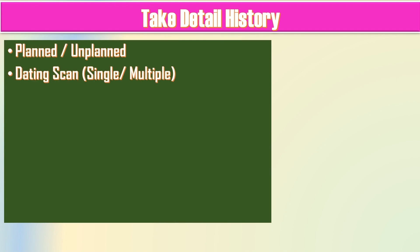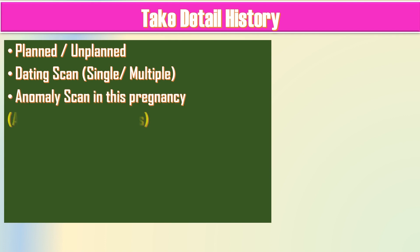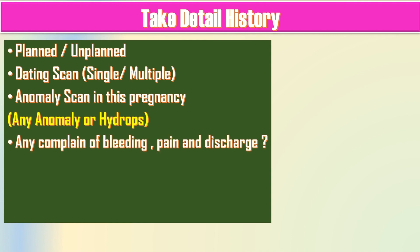Then take a detailed history: whether it was a planned or unplanned pregnancy, whether a dating scan was done, whether it was a singleton or multiple pregnancy, anomaly scan in this pregnancy, and any anomaly or hydrops shown on that anomaly scan. Ask about any complaint of bleeding, pain, or discharge in this pregnancy.